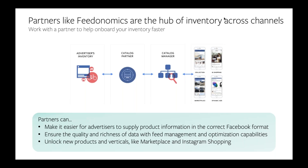Partners can get your data onto Facebook a lot faster and optimize product data to ensure it's high quality with the best possible detail — because we know that higher quality product data results in more conversions. They can also help advertisers unlock new products and verticals. We're focusing on dynamic ads for e-commerce today, but we have a number of verticalized dynamic ad solutions that partners can help prepare data for, including potentially unlocking access to Marketplace or Instagram Shopping.